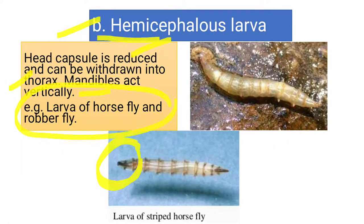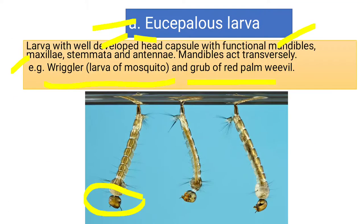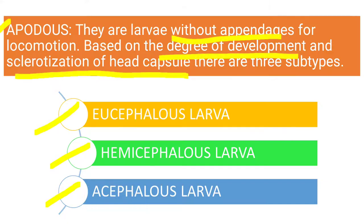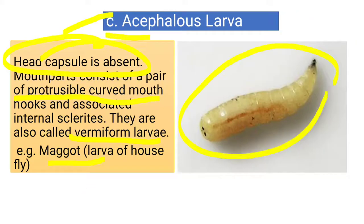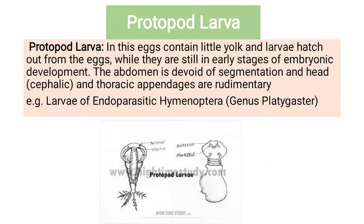So in all, under apodus we have three types of larvae: true head (eucephalus), reduced head (hemicephalus), and head capsule absent (acephalus). This was all about the first type of larvae — the apodus larva. Now let us move to the second type, which is the protopod larva.